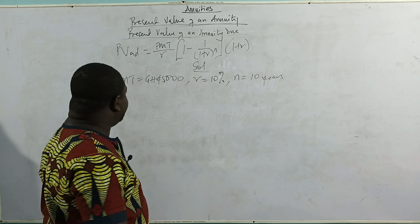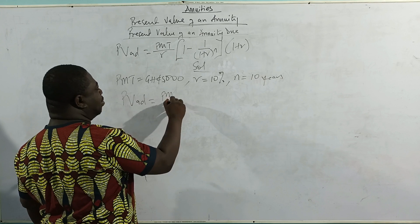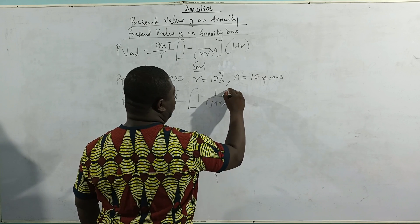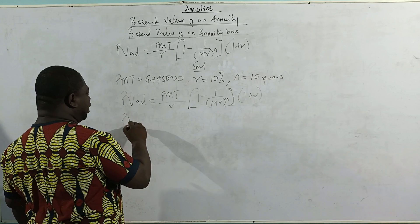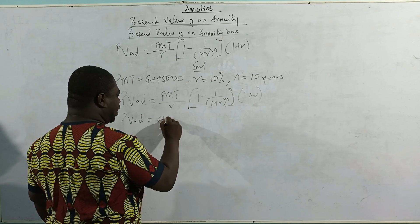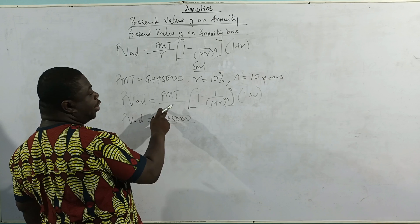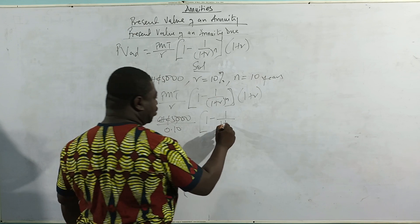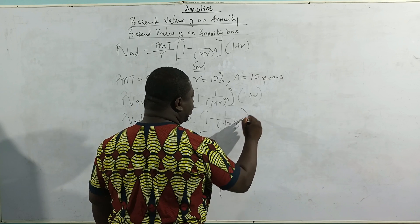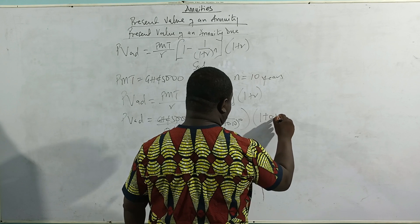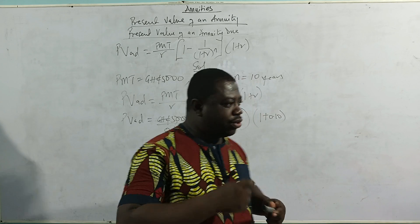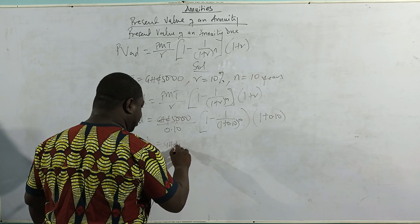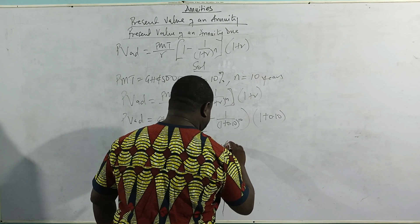So let's code the formula: present value of the annuity due is payments over the rates, multiplying 1 minus 1 over 1 plus R raised to the power n, then multiplying 1 plus R again. Putting them into the formula: 5,000 Ghana cedis all over the rate of 10%, so 0.10, multiplying 1 minus 1 over 1 plus 0.10, raised to the power 10 years, and then we open another bracket: 1 plus 0.10. Once you know the formula, this is a very simple thing to do. So therefore the present value of the annuity due is 50,000 multiplying 0.6759.